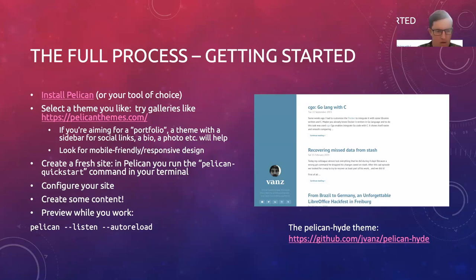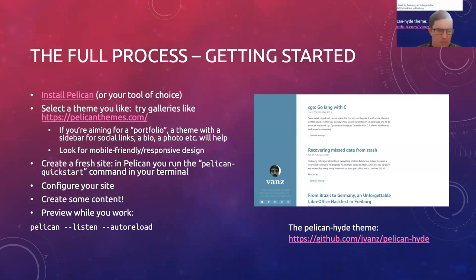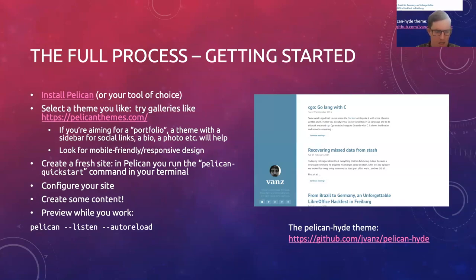When you're looking at themes, check whether the theme says it's mobile-friendly or responsive, because a lot of people use mobiles to browse the web these days. Once you've got Pelican installed, in your terminal you'll run the Pelican quickstart command, which sets up the basic structure of the site. Then you go through configuration, create some content, and decide when you're ready to launch. While you're doing that, Pelican has a tool to preview the site in your local browser — it listens for changes and automatically reloads, showing your site running at a local address.